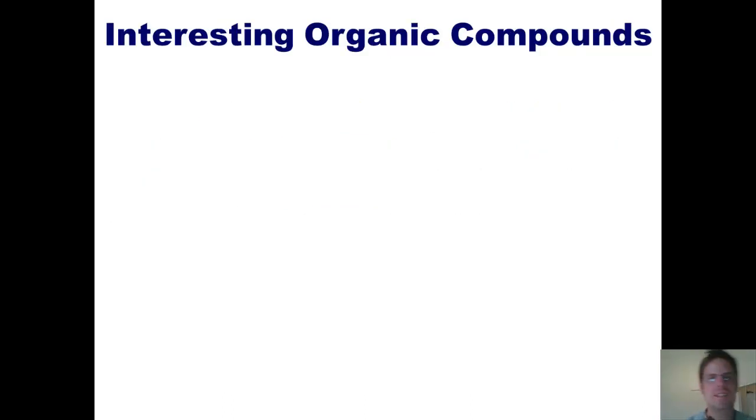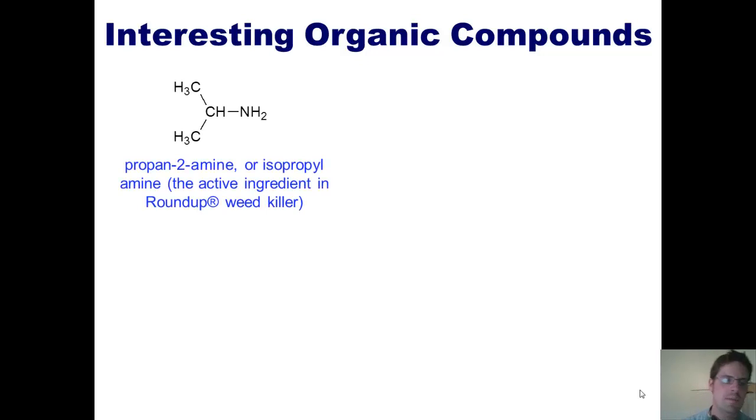Now, there are literally millions of different organic compounds in this world. Many of them have everyday uses. A few such useful compounds include propantuamine, or isopropylamine, shown here, which is the active ingredient in Roundup weed killer.